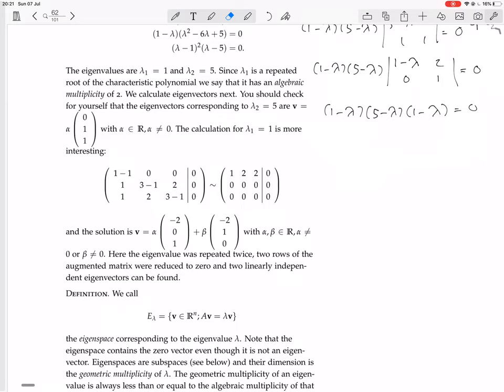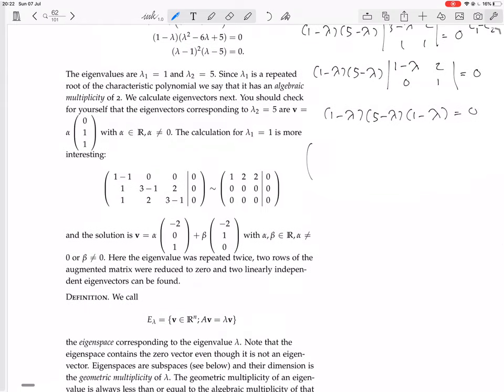We have B minus lambda I, where lambda is 1, from the diagonal in the normal way. You get [[0,1,1], [0,2,2], [0,2,2]] V equals 0.